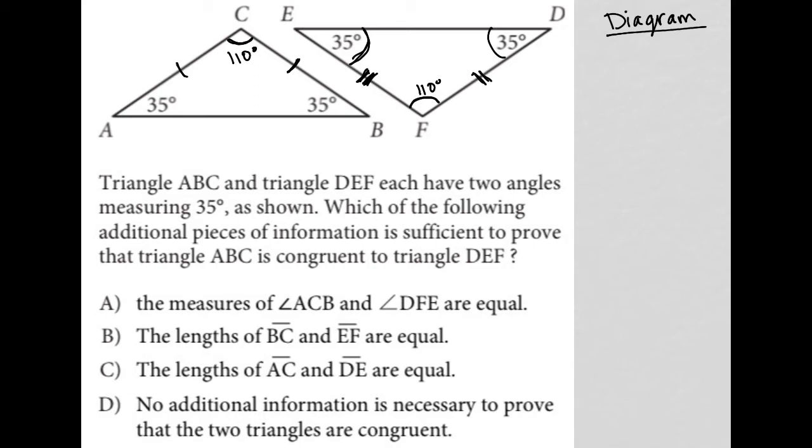Which of the following additional pieces of information is sufficient to prove that triangle ABC is congruent to triangle DEF? Now, this is important. Prove congruent. Hopefully, that rings a bell on some of the things that you remember from geometry, some of the ways in which you can prove the two triangles are congruent.